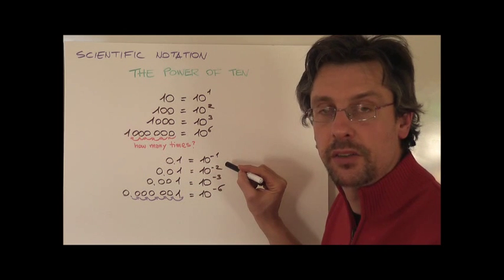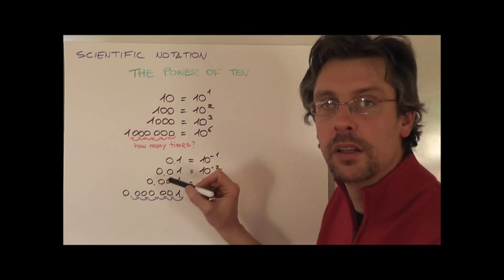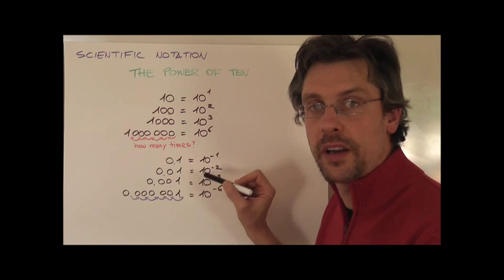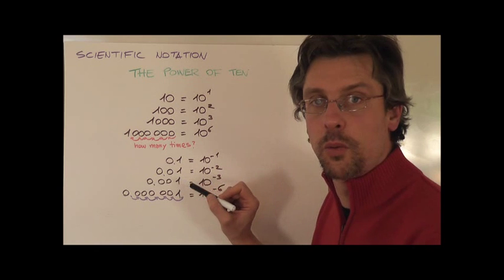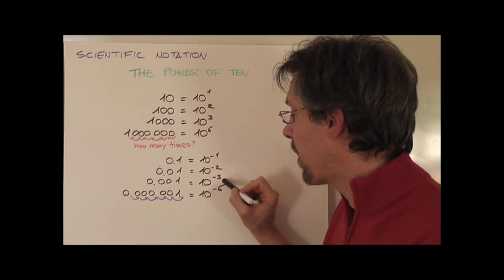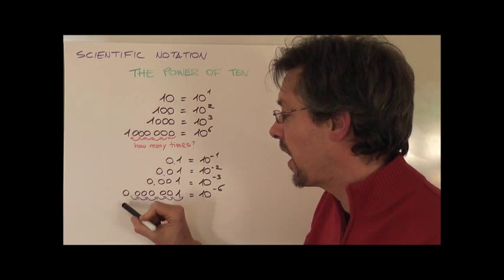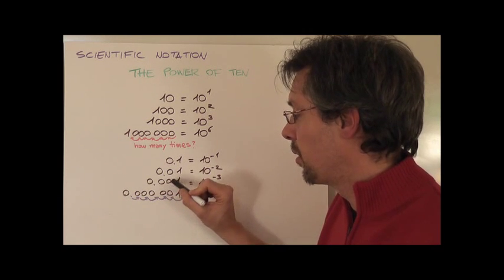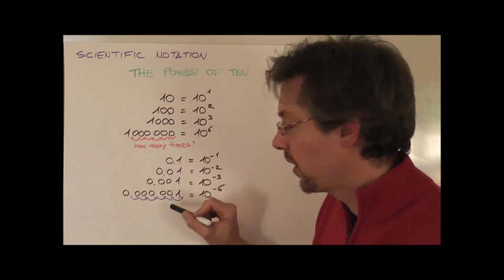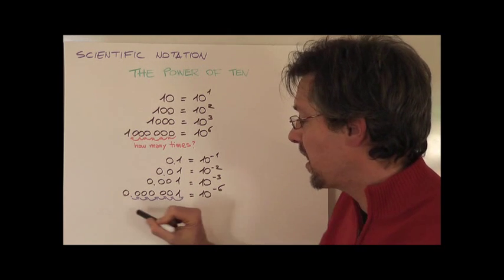0.1 is 10 to the power of minus 1. 0.01 is 10 to the power of minus 2. 0.001 is 10 to the power of minus 3. And finally, 0.00001 is 10 to the power of minus 6.